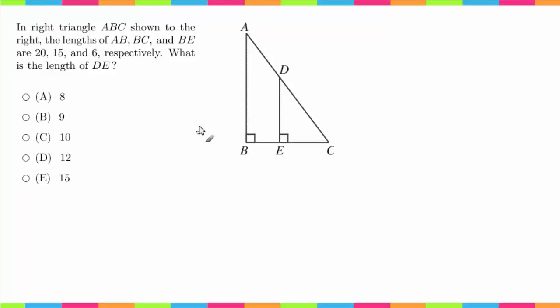So first thing I'm going to do is I'm going to label the figure. So AB is 20, BC is 15, and BE is 6.